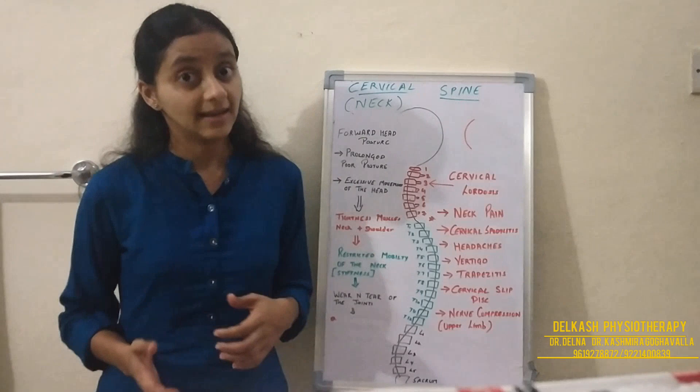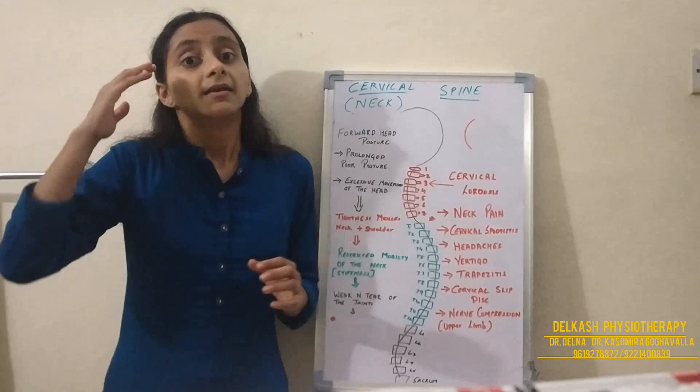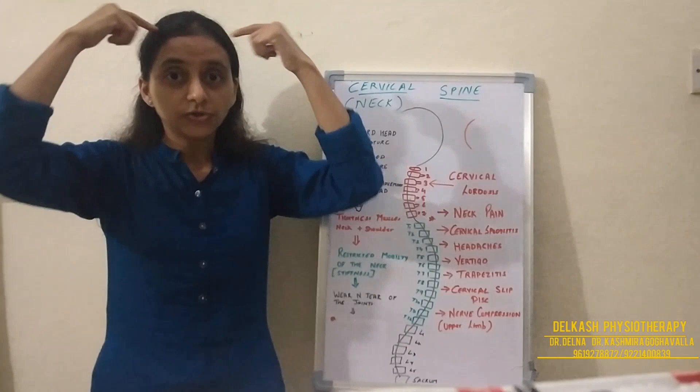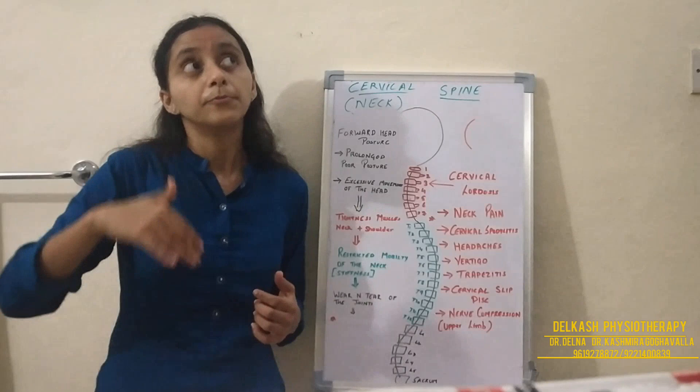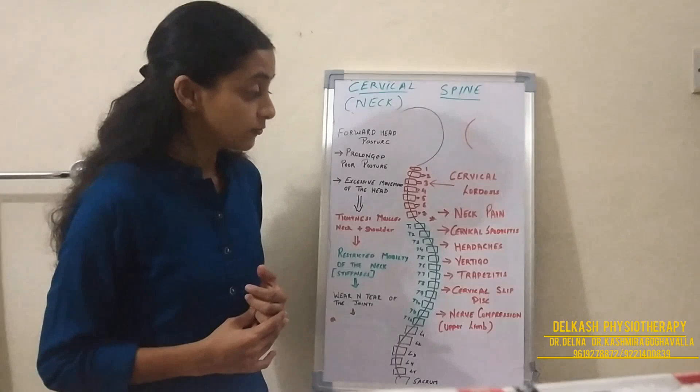A very common condition is cervicogenic headaches, where people get severe headaches associated with neck issues. Spondylitis changes in the cervical spine cause pain in the head because the nerve supply from the cervical region also supplies the head. These severe cervicogenic headaches can progress to vertigo, called cervicogenic vertigo, also occurring due to spondylitis changes in the cervical region.